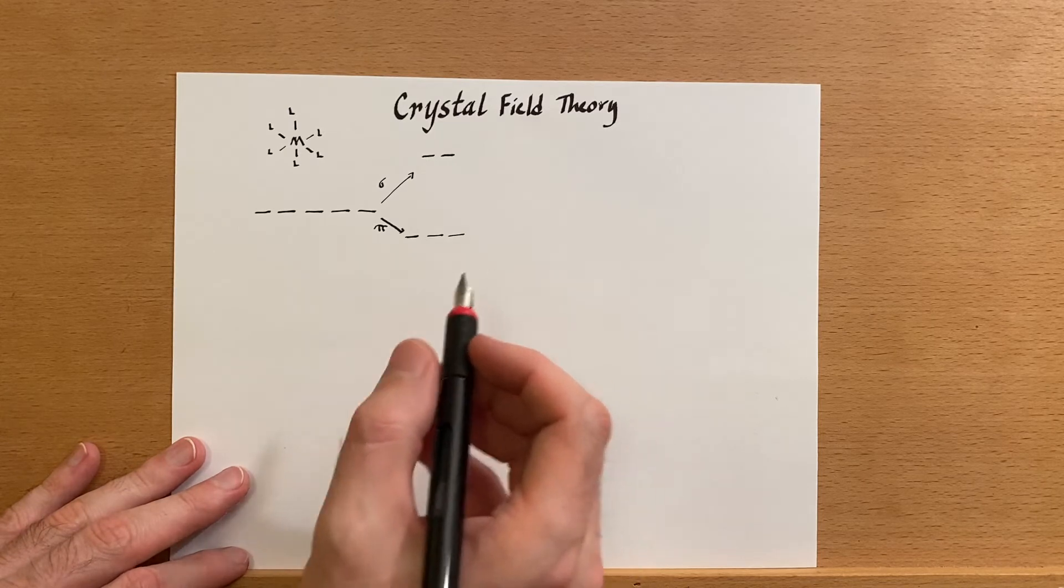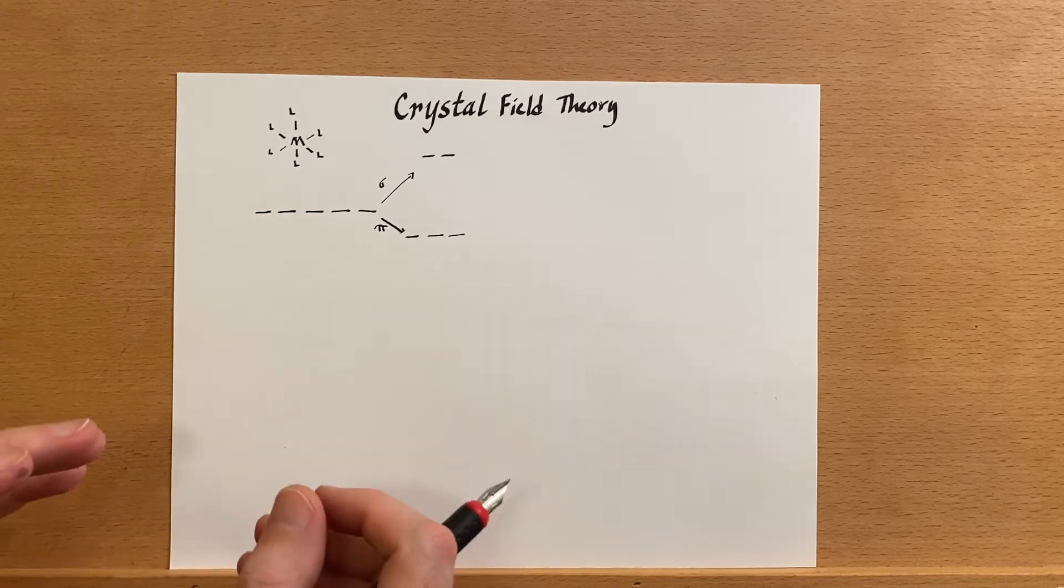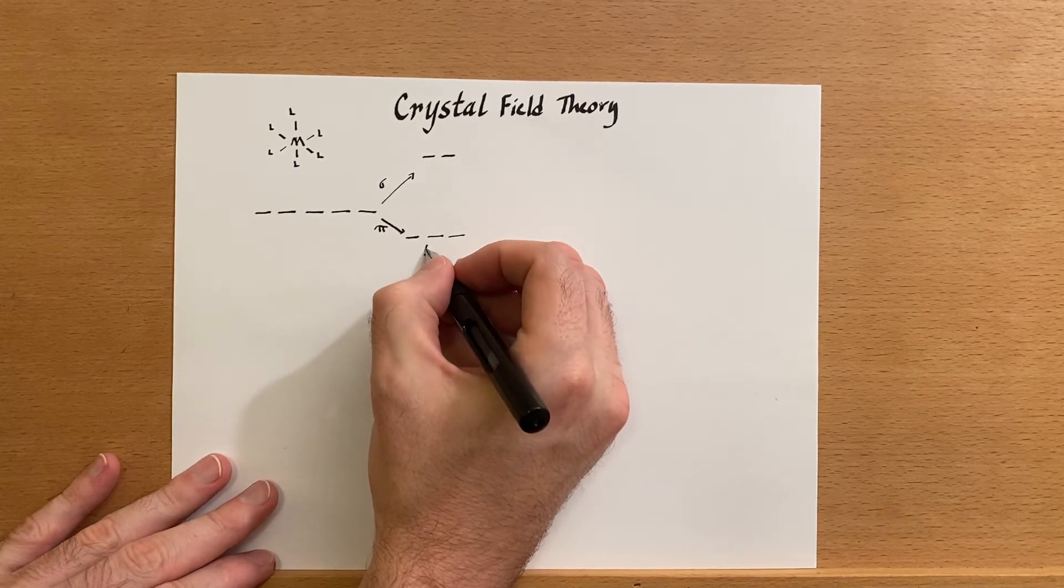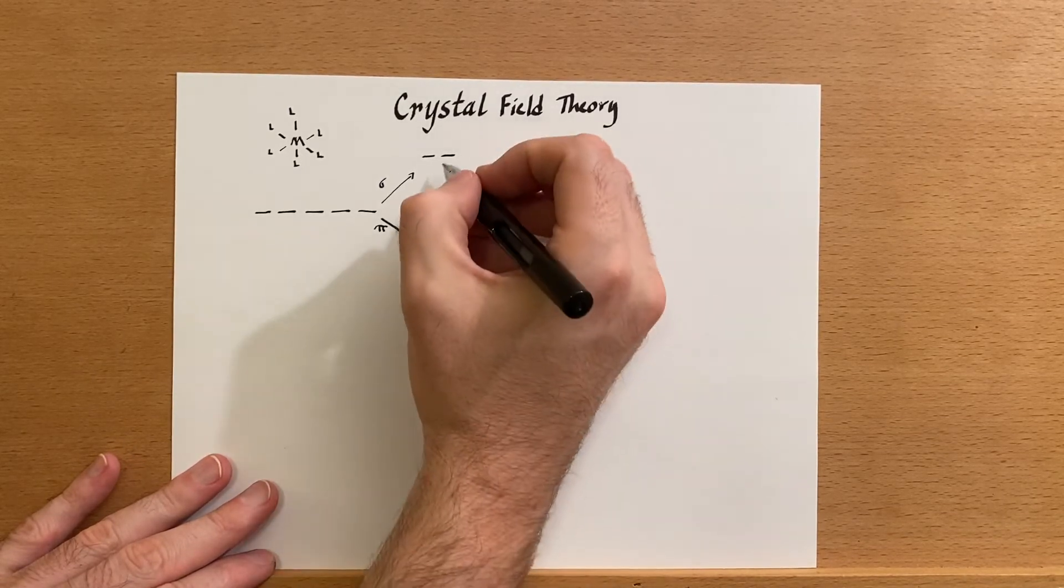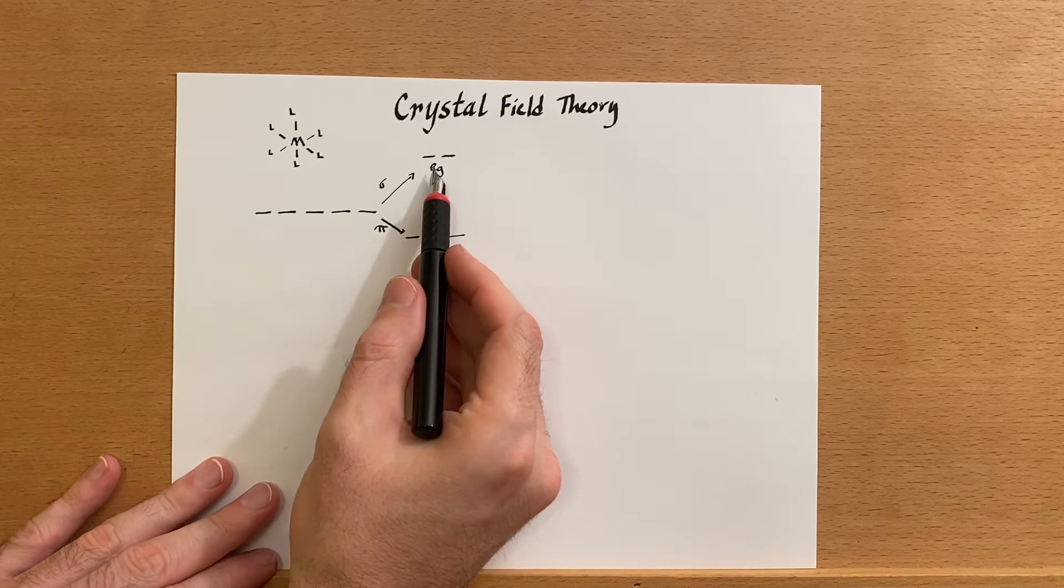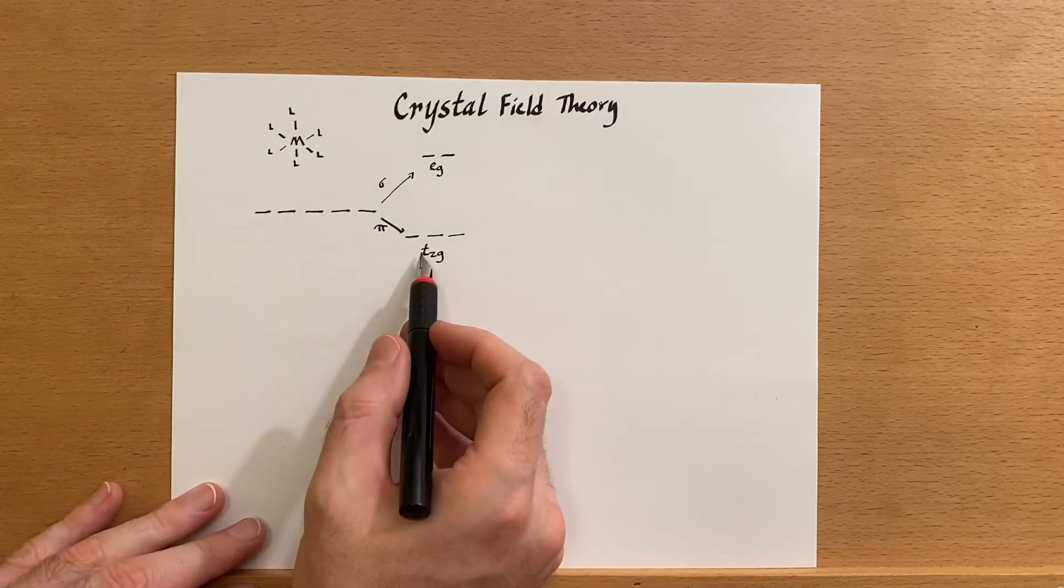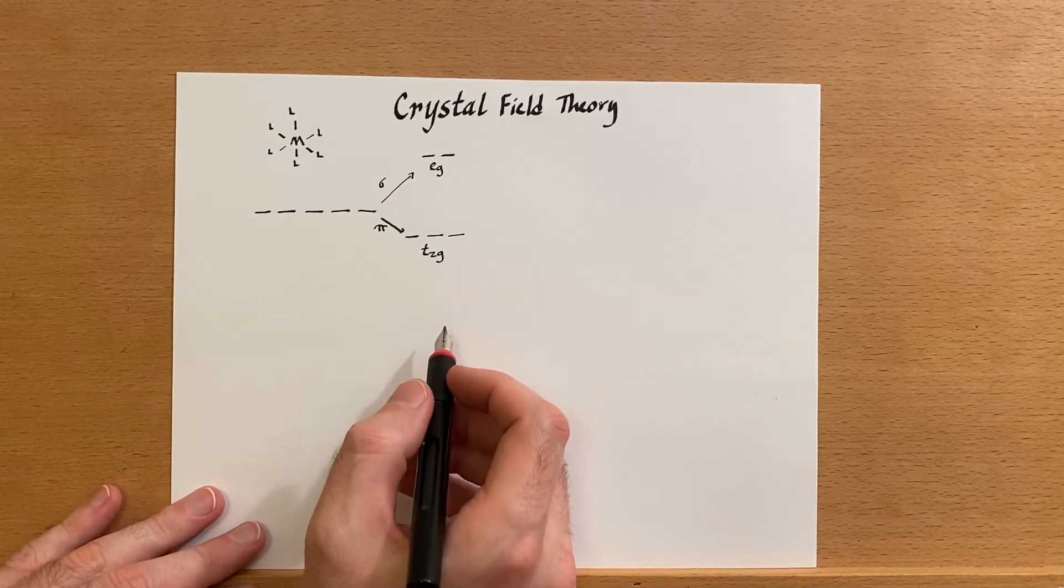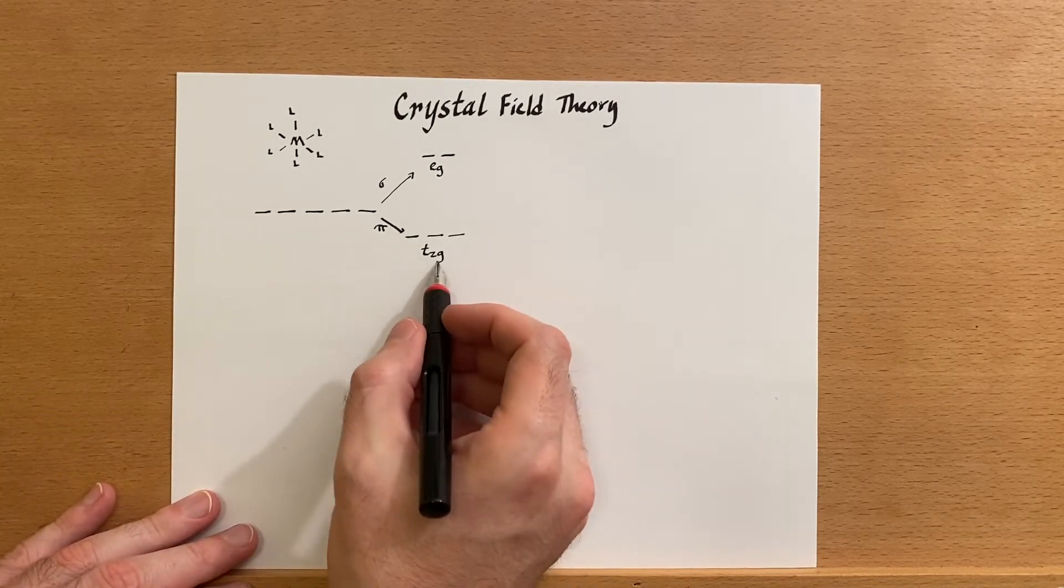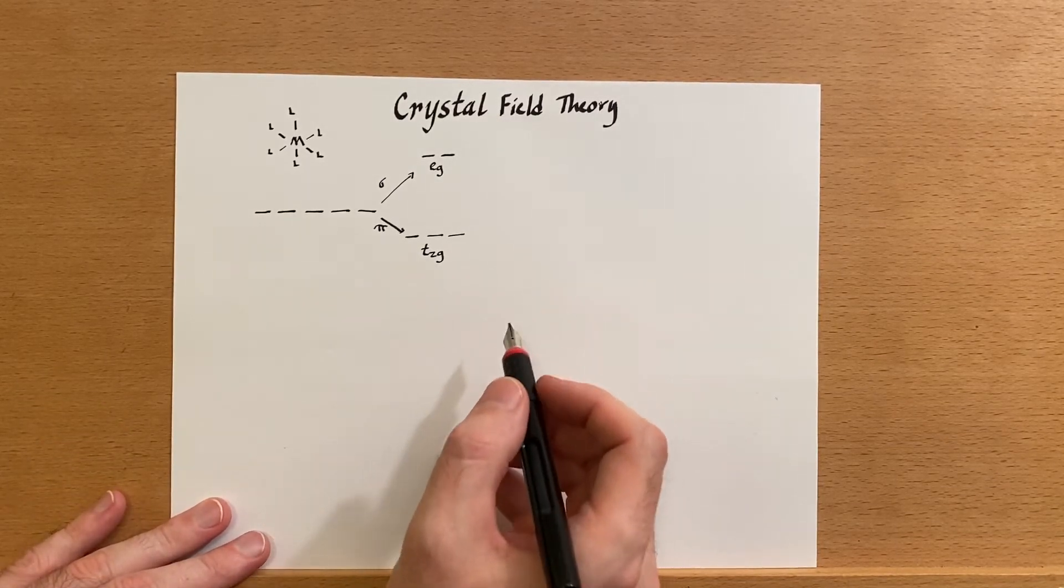Because of group theory and the way that we have things labeled, these are called the t2g orbitals in the octahedral geometry, and these are called the eg. E stands for doubly degenerate, g stands for gerade - it's symmetric about inversion. The t is triply degenerate and it's not symmetric about a rotation or a reflection, so it's a two, but it is symmetric about an inversion.